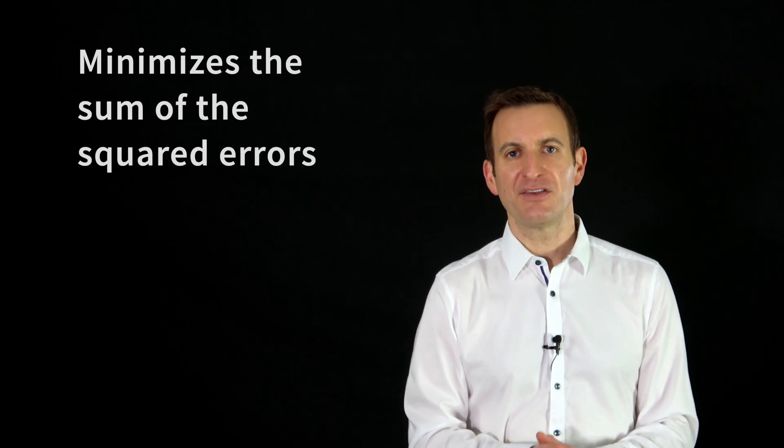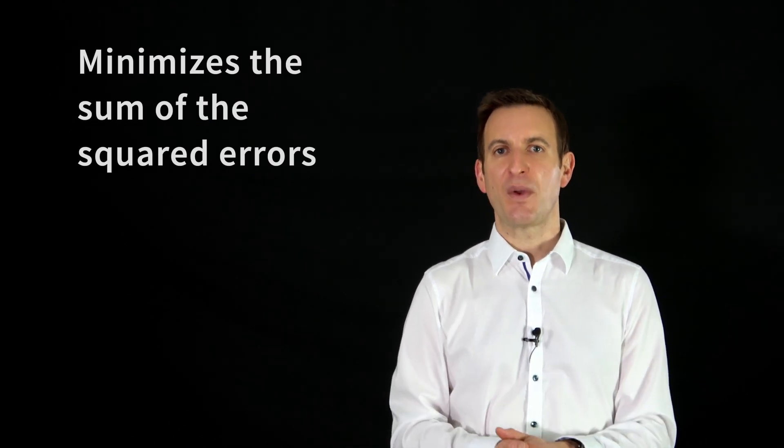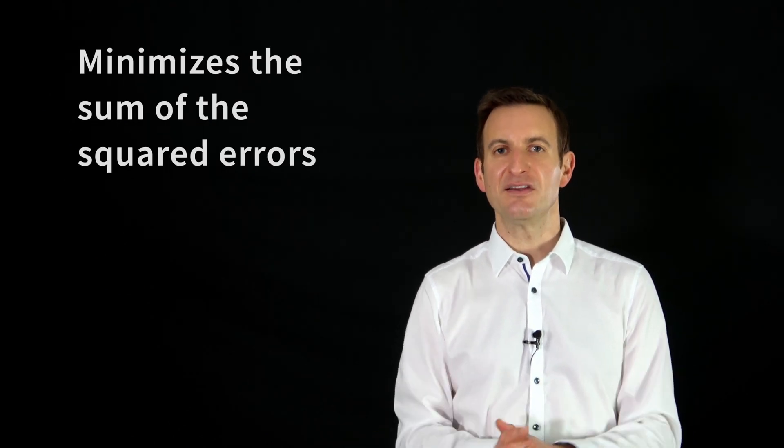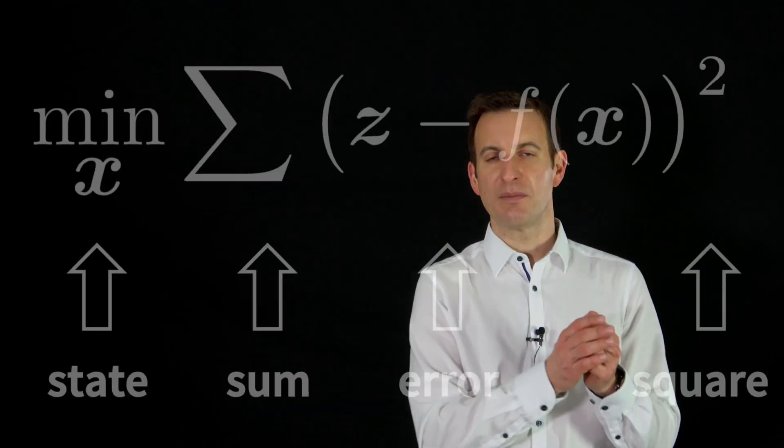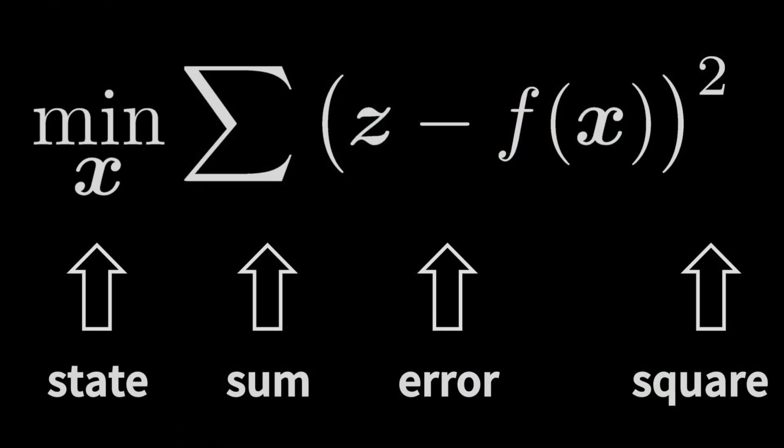The error that we are minimizing is the sum of the squares of those errors. That has led to the name least squares because we are minimizing the sum of the squares of the errors consisting of the discrepancy between what we expected to observe and what we actually observed.